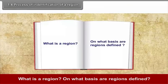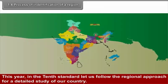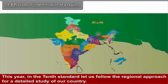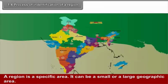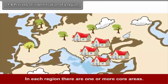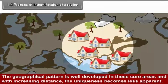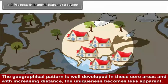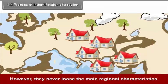The process of identification of a region: What is a region, and on what basis are regions defined? These were studied in the 9th standard. In the 10th standard, we follow the regional approach for a detailed study of our country. A region is a specific area — it can be small or large. In each region, there are one or more core areas where the geographical pattern is well developed. With increasing distance, the uniqueness becomes less apparent, but regions never lose their main regional characteristics.